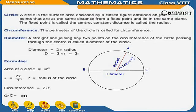Diameter is equal to 2 into radius, or D is equal to 2R. Area of the circle is equal to pi R squared. Pi is equal to 22 upon 7. R is equal to radius of the circle. Circumference is equal to 2 pi R, or circumference C is equal to pi D.